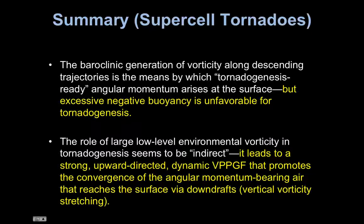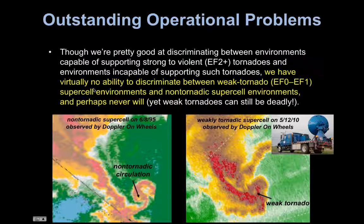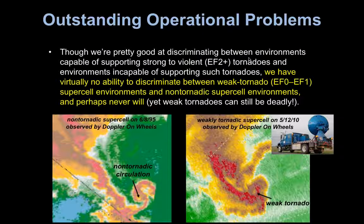To summarize what goes on in supercells: baroclinic generation of vorticity along descending trajectories is the means by which tornado-genesis-ready angular momentum develops at the surface, but too much negative buoyancy is not favorable for tornado formation. Large low-level environmental vorticity seems to play an indirect role in tornado genesis by promoting the sucking effect, which helps intensify the vertical vorticity developed via the downdraft and baroclinic vorticity generation process. We're pretty good at discriminating between strong and violent tornado environments, with SPC outlooks sometimes issued three to five days in advance. But we have essentially no ability to discriminate between weak tornado supercell environments and non-tornadic supercell environments, and perhaps never will.